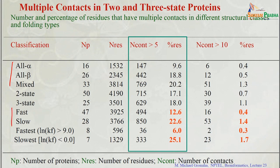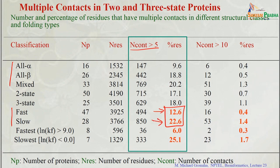Here, this is the percentage of residues which have multiple contacts. If you see the fast and slow folding proteins with the condition of 5 residues, we identify clusters only if the residue contains more than 5 long-range contacts. For fast folding proteins there are only 12.6%, and for slow folding proteins you can see 22.6% of residues present. This tells you that proteins with more multiple contact residues are slowing down in the folding process.